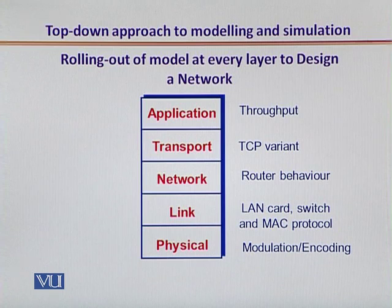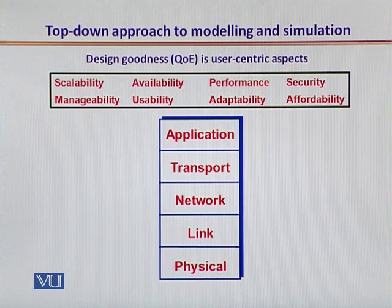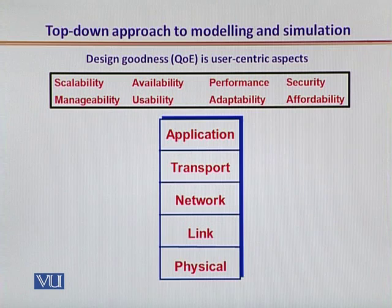Now, with this rolling-out strategy, if we were just to consider it as a monolithic five-layer approach, we would be making a mistake. Why? Because, at the end of the day, it is a human user that is using this system. So, the actual overall success of any network is to be gauged according to the goodness measure that the user defines as the quality of experience.